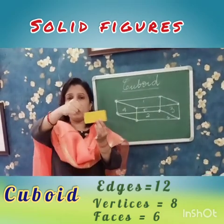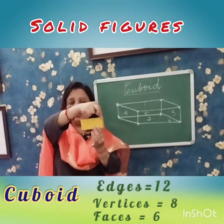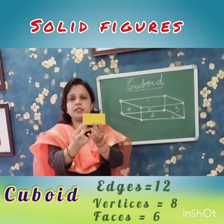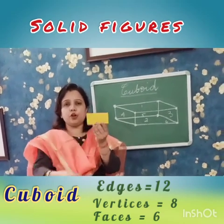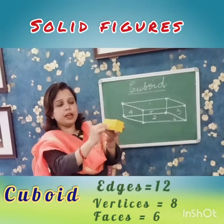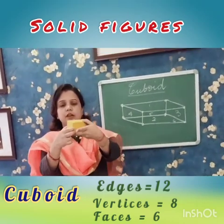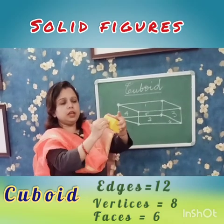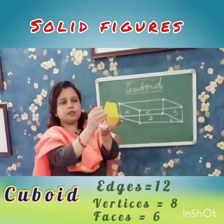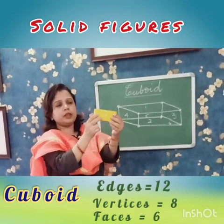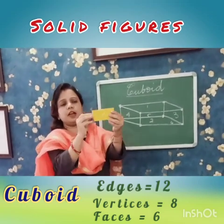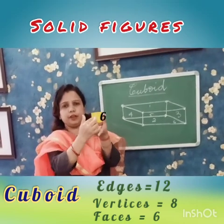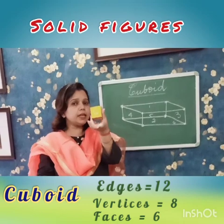Vertices: 1 vertex, 1 corner, 2, 3, 4. Then 5, 6, 7, 8 corners. Faces: 1 face in the front. When you turn back, 2 at the back. 3, the top face. 4, the bottom face. 5, the left face. And 6, the right face. So it has 6 faces.